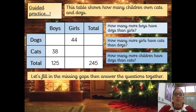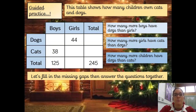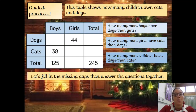Under the resources on the school website, there's a printout for you. You can print it out or just copy it onto a piece of paper. I would like you to fill in the missing gaps before you answer the questions. It shows how many children own cats and dogs. For example: how many more boys have dogs than girls? We don't know yet because you have to work out the missing gaps first. Have a go at this one by yourselves.